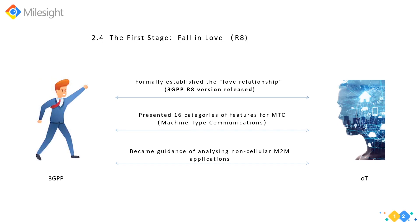Over the past years, 3GPP and IoT had three important stages. Since 2005, 3GPP has been paying much attention to the development of M2M, and officially confirmed the relationship in its R8 release. 3GPP enhanced its network capability to better support M2M, and proposed 16 different categories of features for MTC — machine-type communication. This stage is the 'falling in love' stage of 3GPP and IoT. They accumulated much experience and made a lot of research, which became a guidance to analyze non-cellular network-based M2M applications.